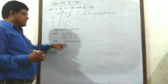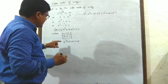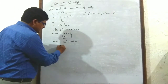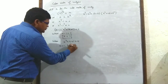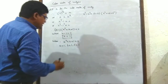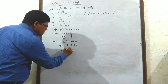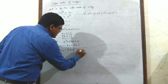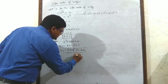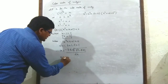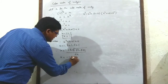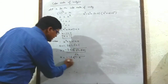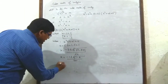Here, apply Sridharacharya formula, comparing the standard form of a quadratic equation. A = 1, b = 1, c = 1. Therefore, x = (-b ± √(b² - 4ac)) / 2a. Or, x = (-1 ± √(1 - 4)) / 2.